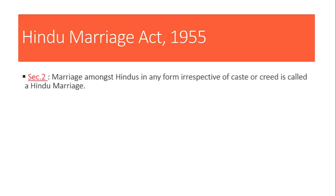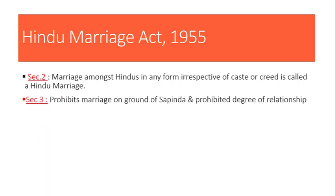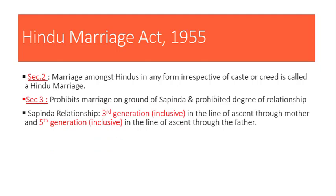Hindu Marriage Act ke important sections ko hum one by one discuss karte hain. Section 2 kehta hai that marriage amongst Hindus in any form, irrespective of caste or creed, is called Hindu marriage. Section 3 mein prohibition ki baat ki gayi hai. The marriage is prohibited on the ground of sapinda relationship and prohibited degree of relationship — in dono type ke relations ke beech mein marriage prohibited hai as per Hindu Marriage Act.